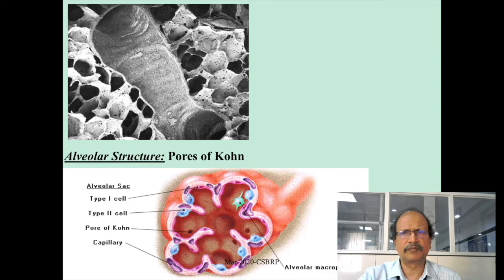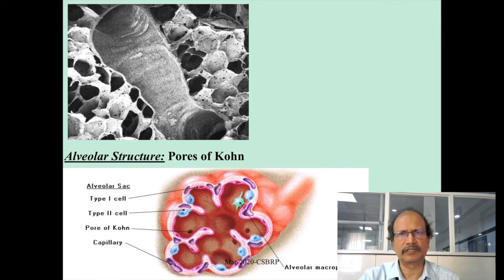This diagram represents the presence of pores of Kohn. You can see a scanning electron microscopy photograph wherein alveolar sacs are highlighted. If you look at the alveolar sac wall, there are some dark spots — these are the communications between adjacent alveolar sacs, known as pores of Kohn, through which inflammation or infection spreads from one alveolus to the other, producing the lobar variety of pneumonia.